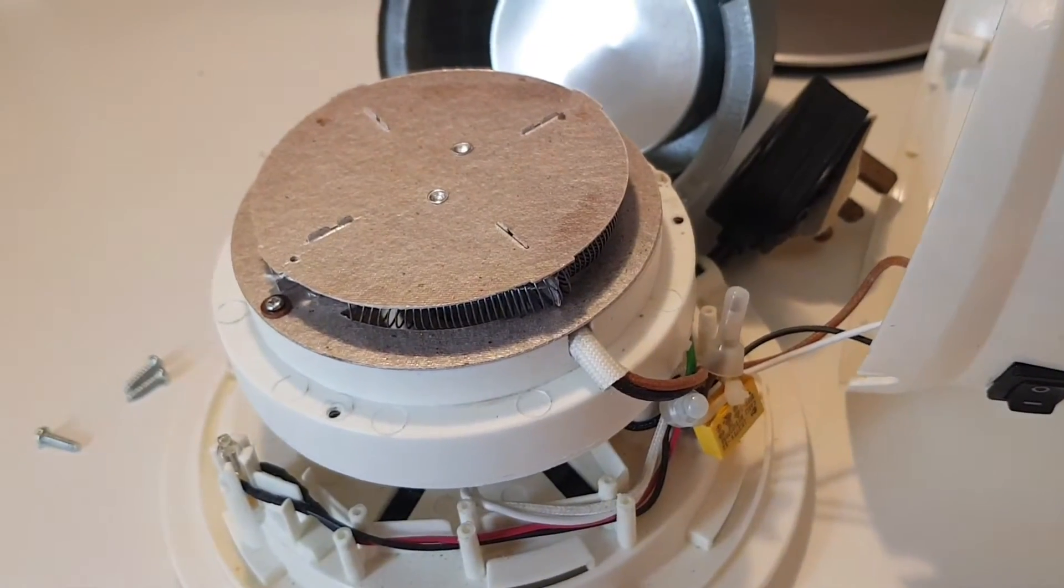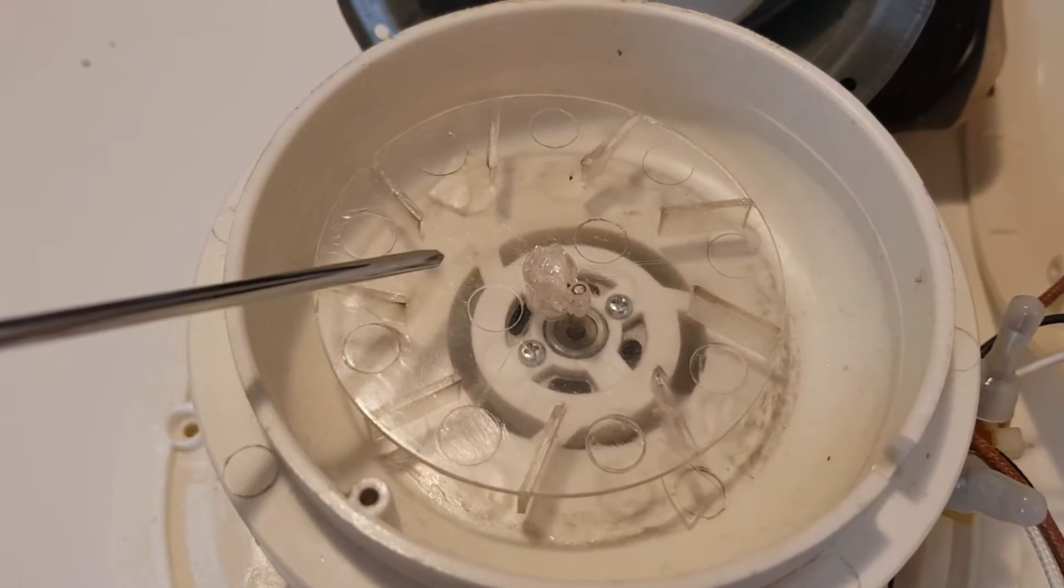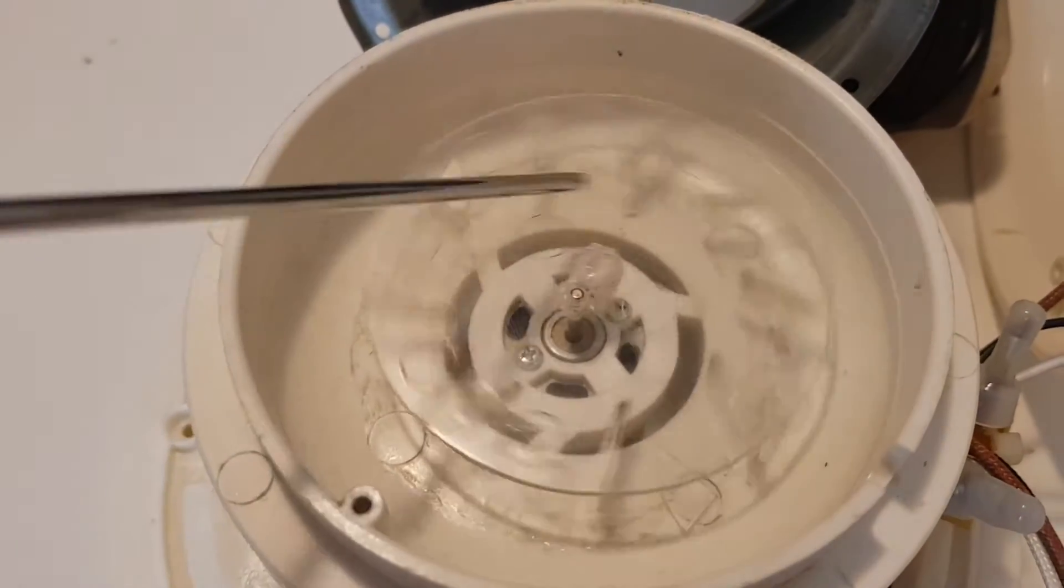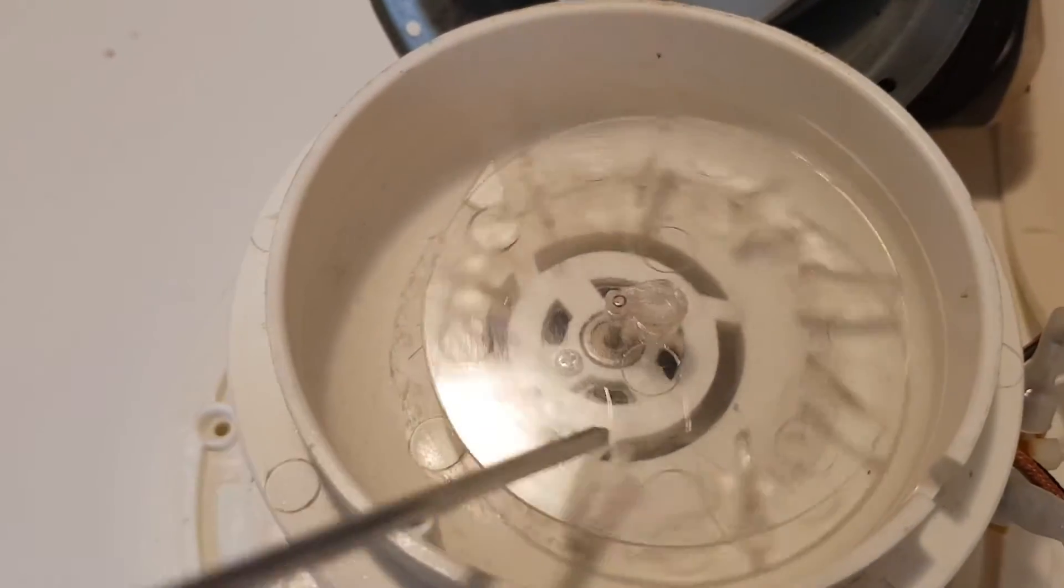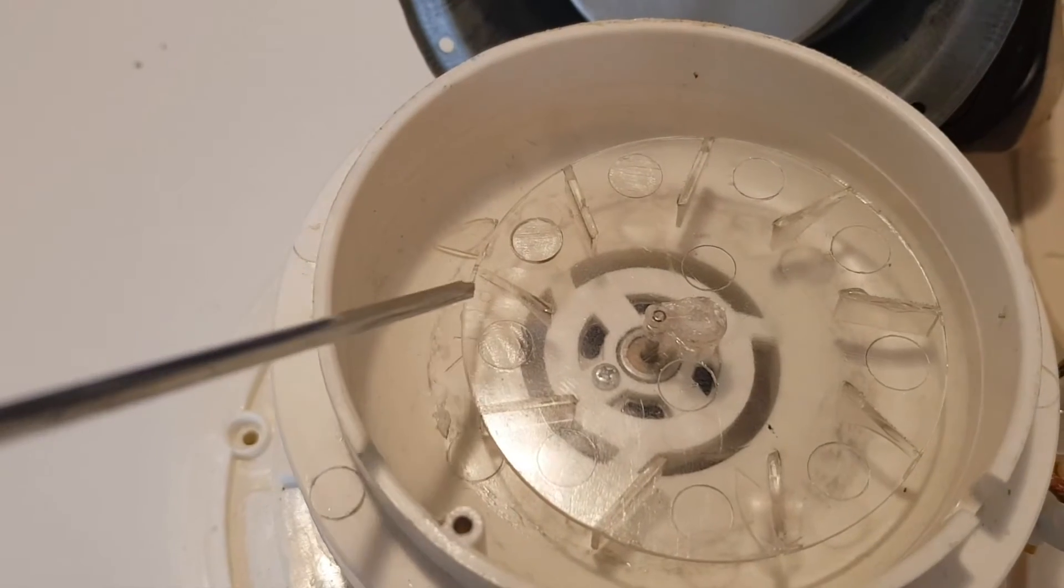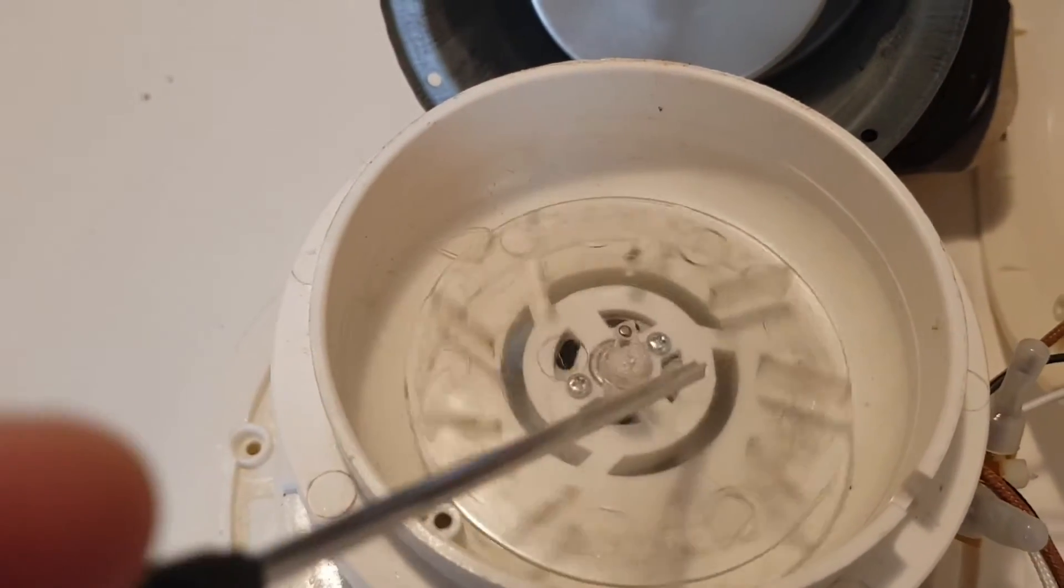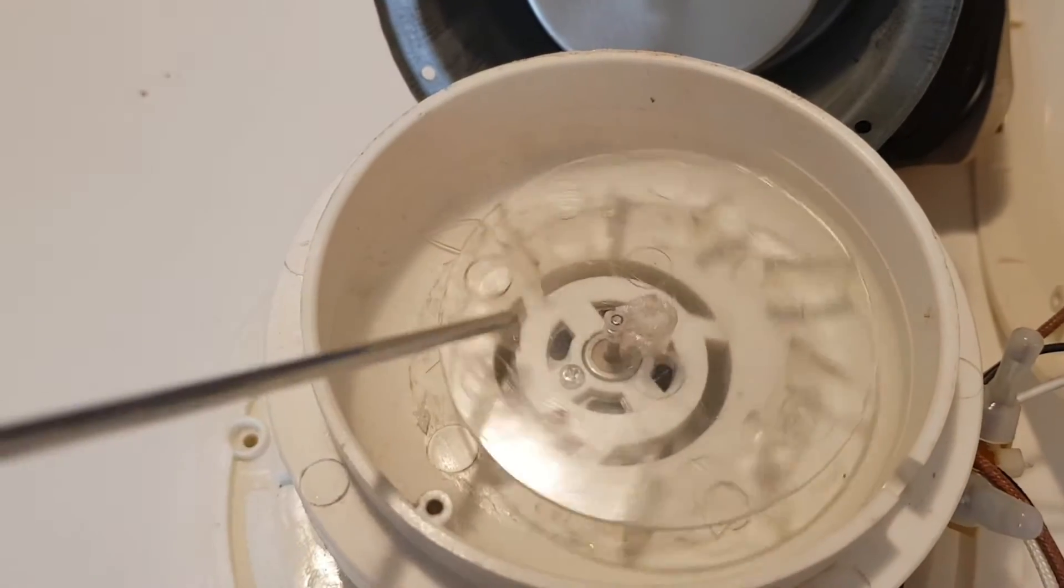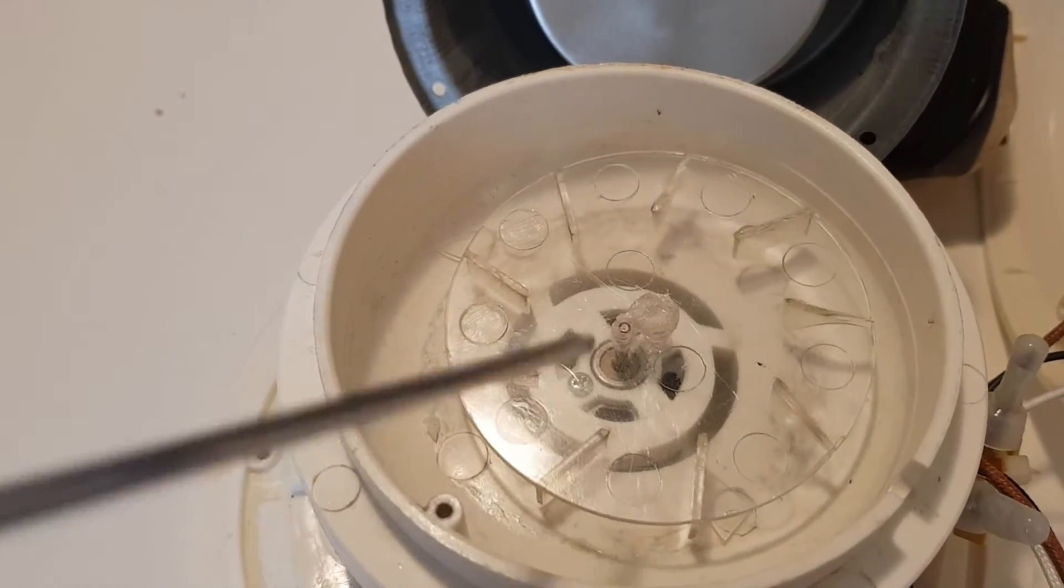So I think we've found the problem and it looks like the impeller blade has melted and it's kind of ended up off-center, so it's not really spinning properly anymore. On top of that, you can also see there's little bits of plastic in here which actually looks like the impeller blades have broken off. So yeah, I think we're going to have to try and see if we can get a replacement for this.